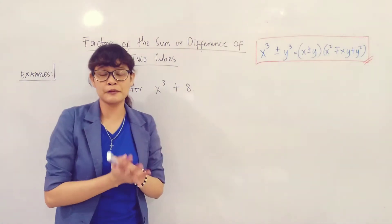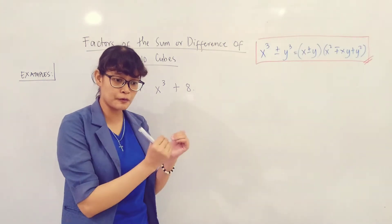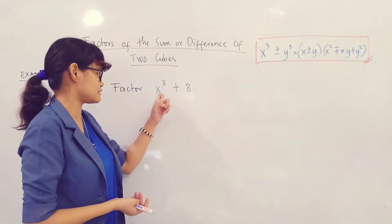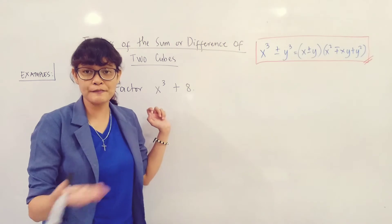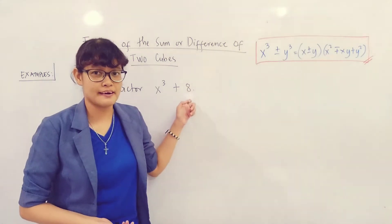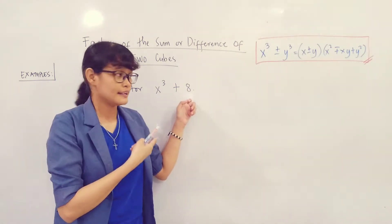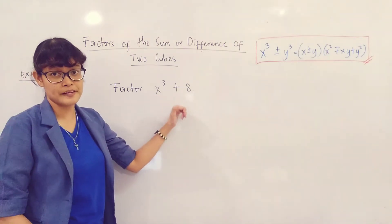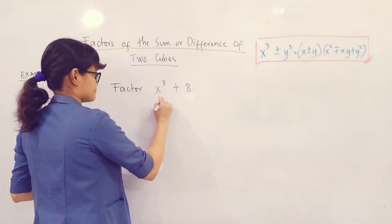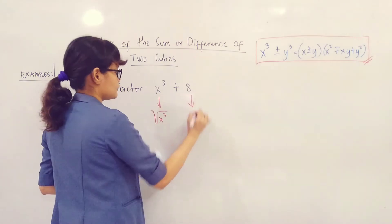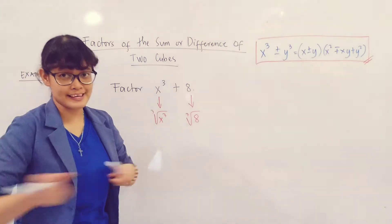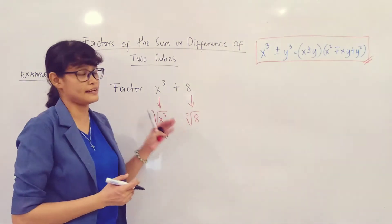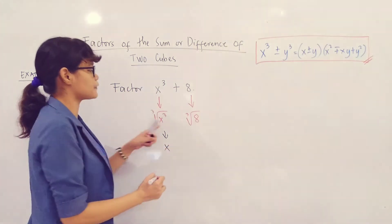As for variables, to check if it's a perfect cube, simply look at its exponent. If the exponent is divisible by 3, then it is a perfect cube. Here, x cubed has exponent 3, so it is a perfect cube. And 8 is also a perfect cube — there is a number that when multiplied by itself 3 times equals 8. Now let's begin factoring.